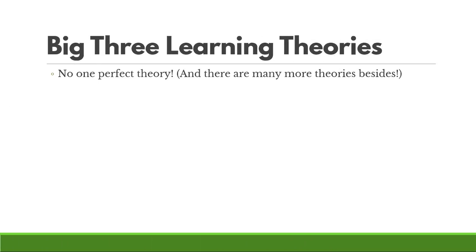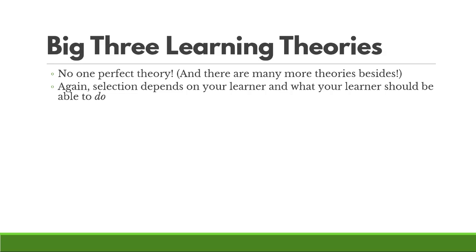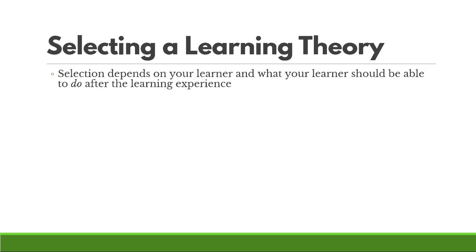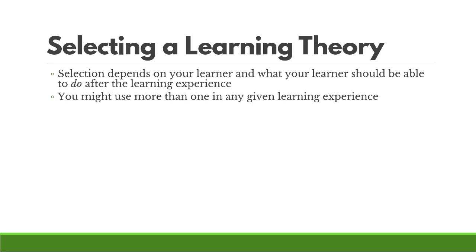There's no one perfect learning theory. There's lots of right ways to do things and lots of ways to get your learning experience completed. Selection is going to depend on your learner and what your learner should be able to do, and you might use more than one in any given learning experience. Behaviorism can be a good foundation; cognitivism is a great way to think about scaffolding and structuring things so they're processed easily by your learner; and maybe constructivism is the capstone where learners go out and apply something in the real world. Once you have a good understanding of how these three work, it helps to figure out what strategies will work well for your target audience.